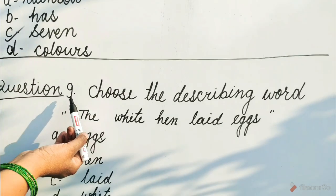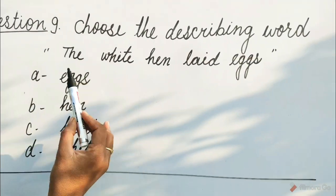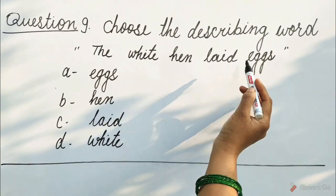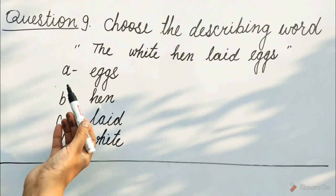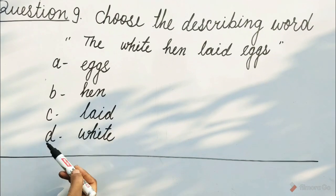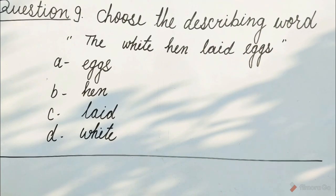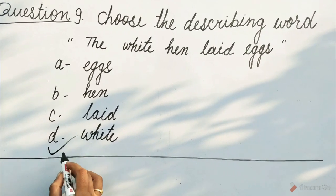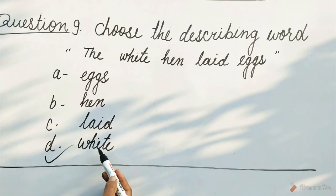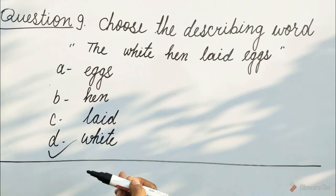Question 9: Choose the describing word. Sentence: The white hen laid eggs. Options are A. Eggs, B. Hen, C. Laid, D. White. Guess children, which option will be correct? Yes, it is D option — White. Because white represents the color of the hen.